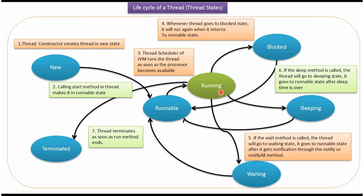When the thread is running, if the wait method is called, then the thread will go from running state to waiting state. The thread goes from waiting state to runnable state after it gets notification through the notify or notify all method. From running state, the thread will go to terminated state as soon as the run method ends.